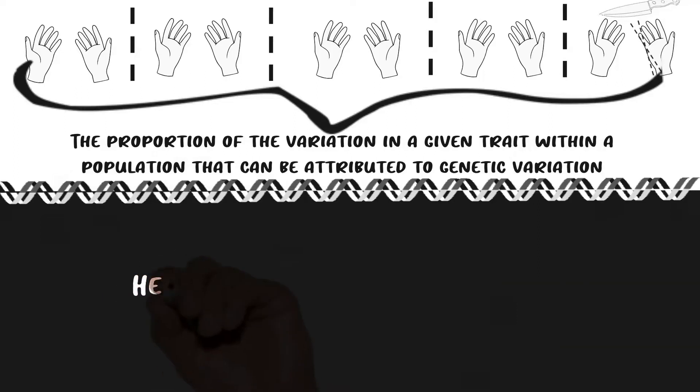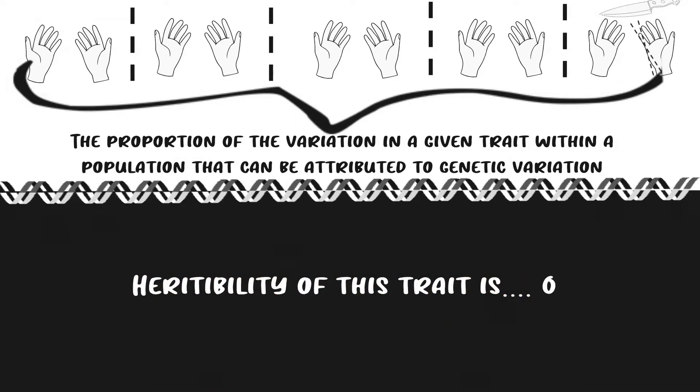Our friend with nine fingers, the reason he has nine fingers is entirely due to the fact that he chopped it off, not because of his underlying DNA. So the heritability of the number of fingers on your hand is zero. And the reason this is a good example is because, of course, the reason we have ten fingers is genetic, but the heritability of this trait is zero.